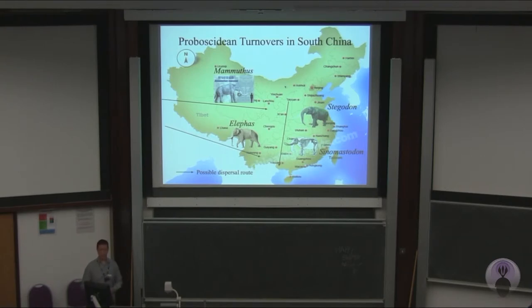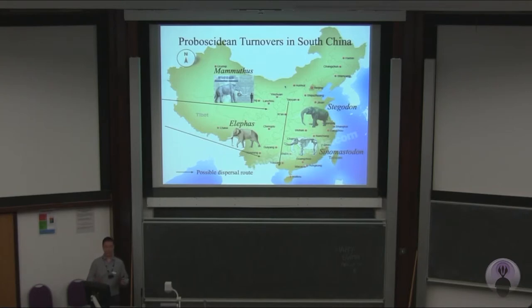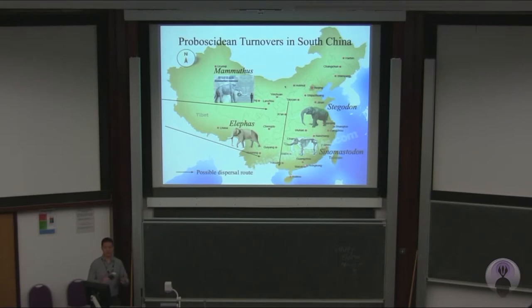So the question we must ask is: what triggered this change? A stock explanation for the evolutionary history of large mammals in the Cenozoic is climate change, but we must also consider the possibility of competition. South China provides an ideal testing ground for this hypothesis, because we have all three genera representing three different families of proboscideans present in successive stages of the Pleistocene.